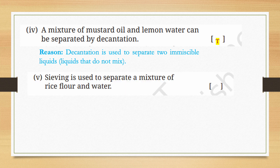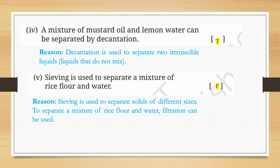Sieving is used to separate a mixture of rice flour and water — this statement is false. Sieving is used to separate solids of different sizes. To separate a mixture of rice flour and water, filtration can be used.